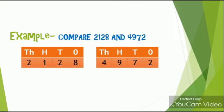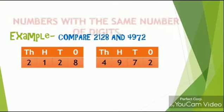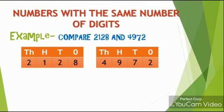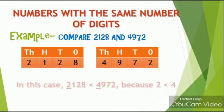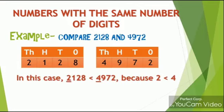Let's see another example. The two numbers for comparison are 2128 and 4972. Here also, both numbers have the same number of digits. But the extreme left digit in the first number is 2, while the extreme left digit in the second number is 4. Comparing 2 and 4, we can say clearly that 4972 is the greater one.